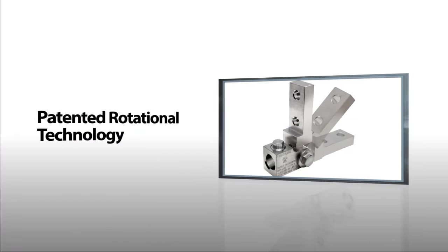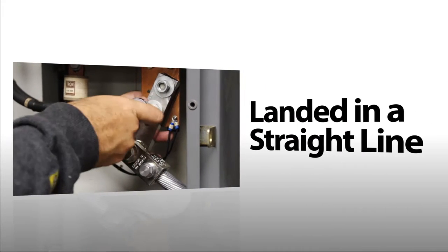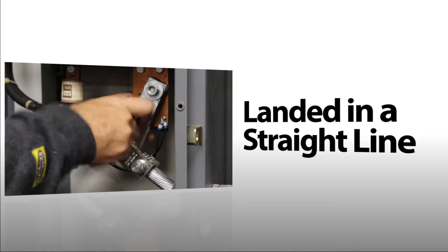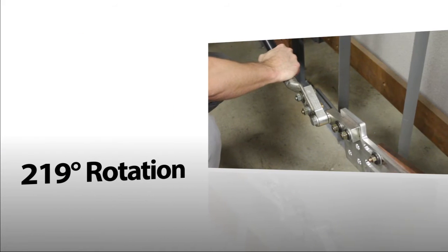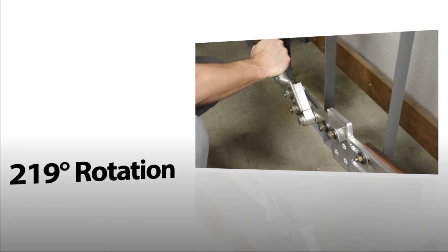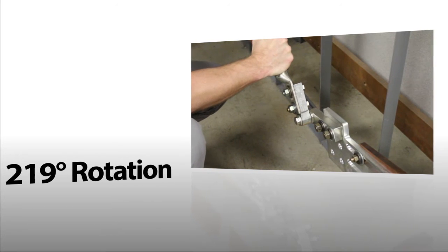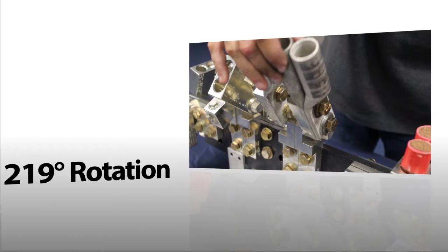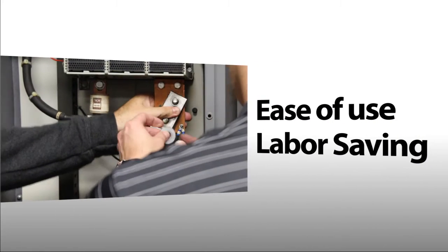The Rotolug features patented rotational technology. Rotational lugs allow the wire to be landed in a straight line into the switchgear box or breakers. The technology offers lug bodies the ability to be rotated 219 degrees to allow connection to the bus from virtually any point, providing 50% labor savings for contractors.